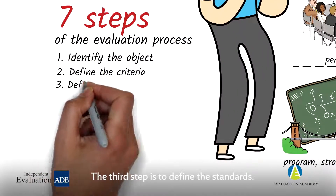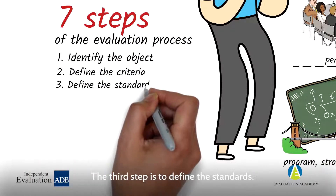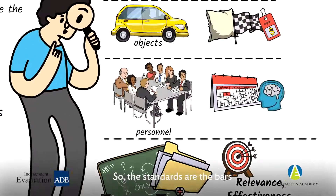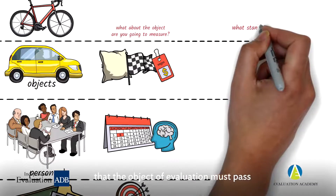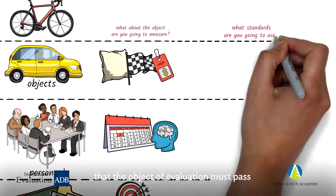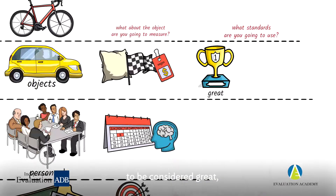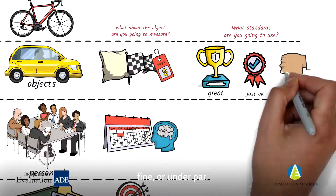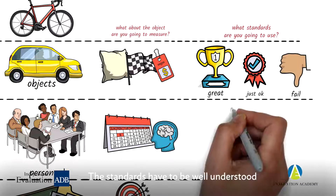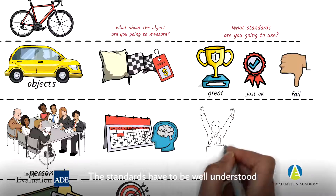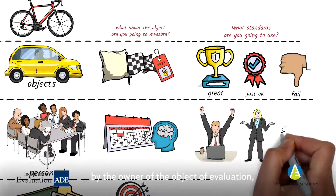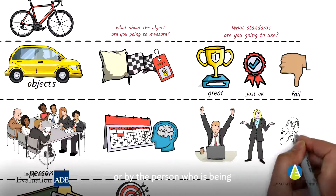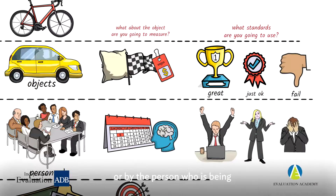The third step is to define the standards. The standards are the bars that the object of evaluation must pass to be considered great, fine, or under par. The standards have to be well understood by the owner of the object of evaluation or by the person who is being subject to evaluation.